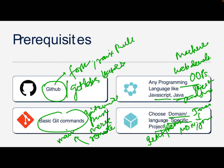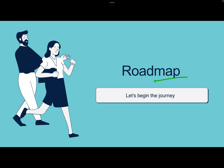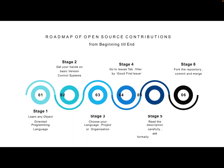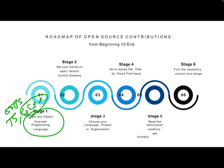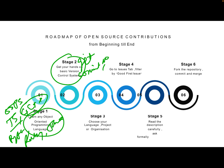The roadmap for open source contribution begins with choosing an object-oriented programming language, as mentioned — C or C++ can also help but there are fewer projects available for them on GitHub. JavaScript, Python, Ruby, and Java have a large number of projects. The second step is to get your hands on the basics of git commands: how to commit, merge, raise a pull request, and fork a branch from master to your remote.